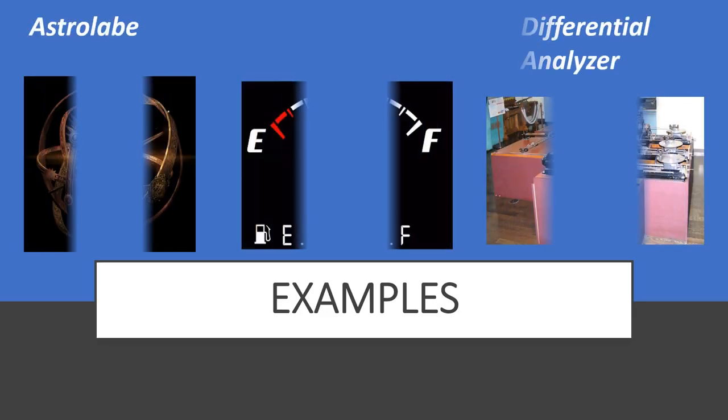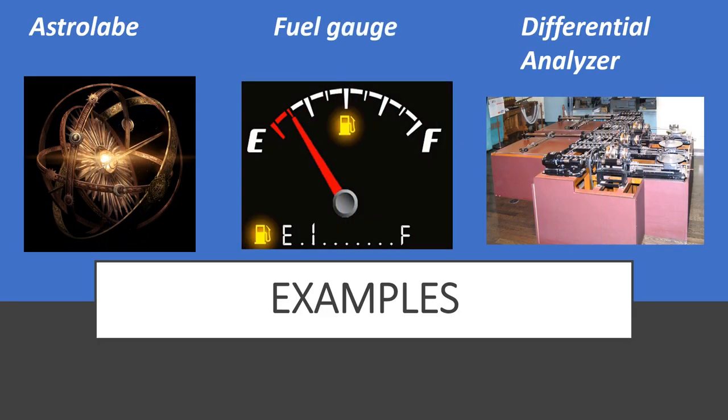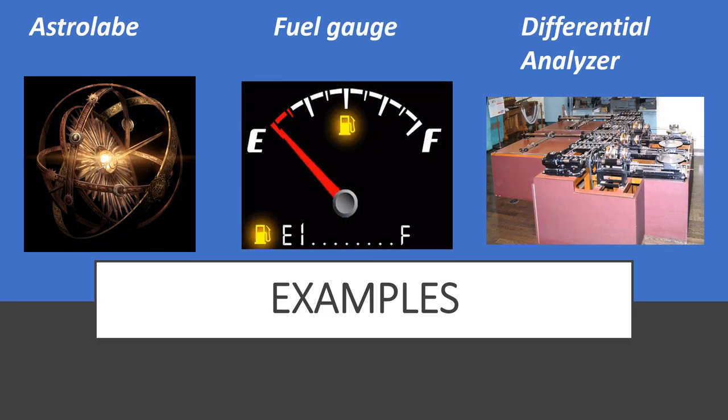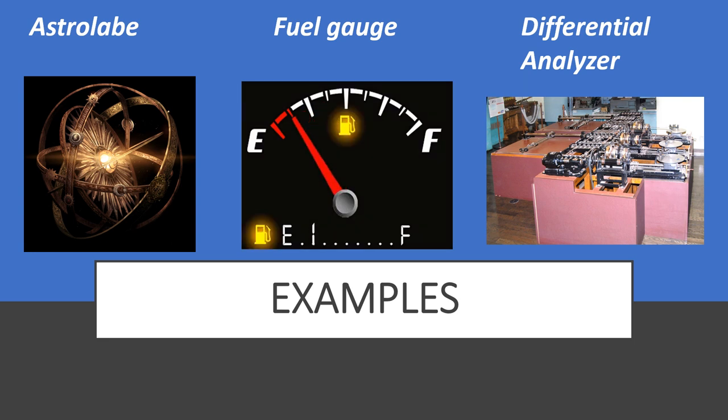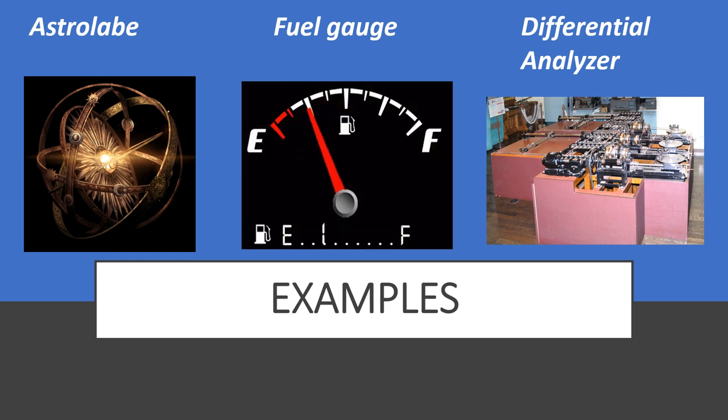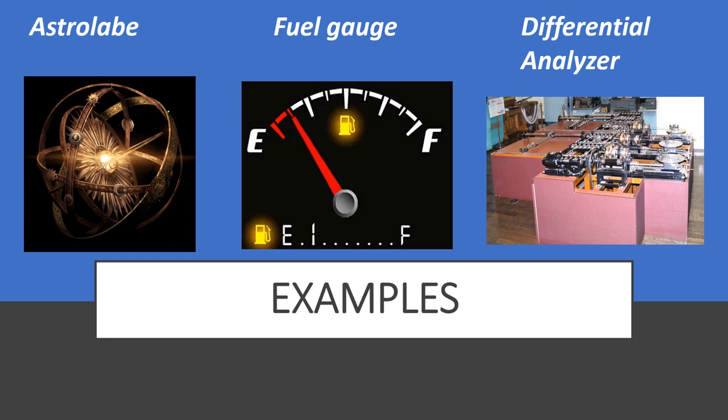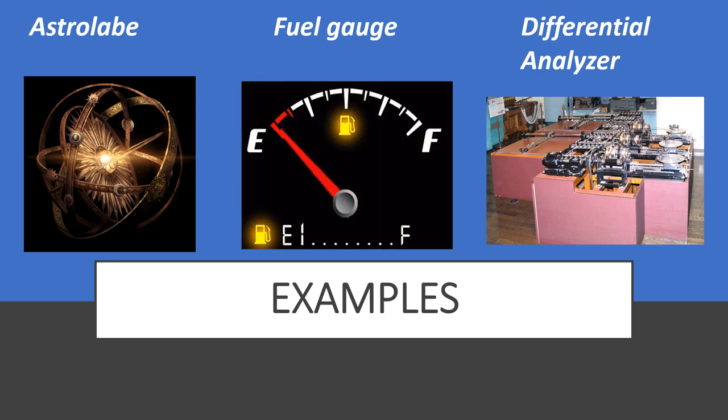Examples of analog computers are: astrolabe, fuel gauge, and differential analyzer.